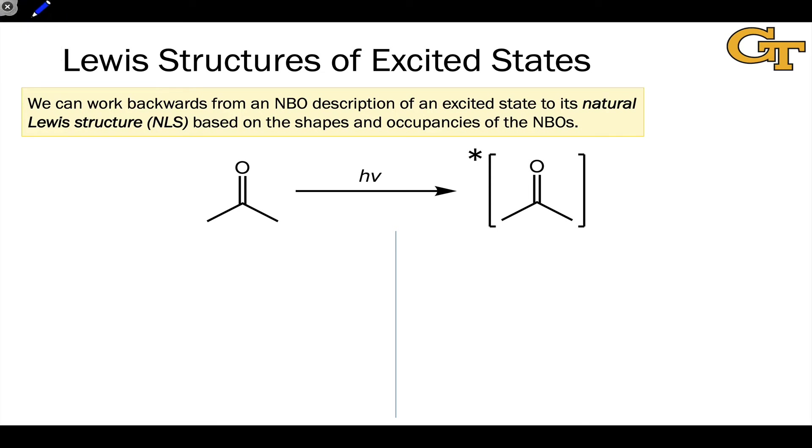Finally in this video, I want to make the point that we can actually work backwards from an NBO description of an excited state, the NBO electron configuration, say n π* or π π*, to a natural Lewis structure for the excited state that makes the most sense based on the way we populated electrons in the NBO and based on their shapes where those orbitals live in space.